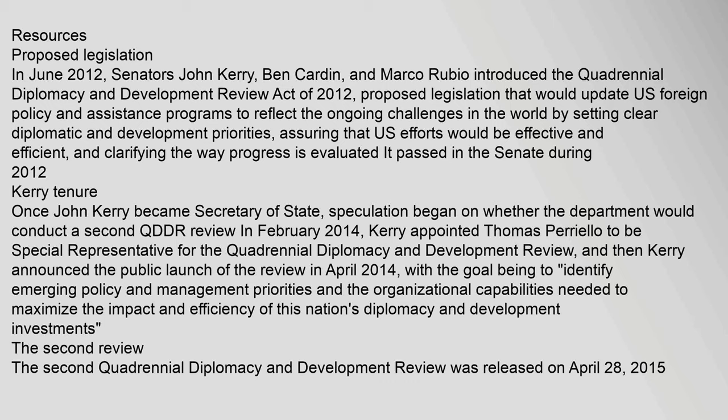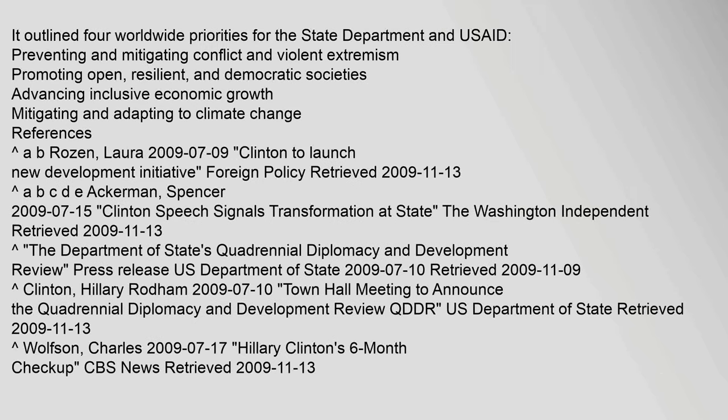The second Quadrennial Diplomacy and Development Review was released on April 28, 2015. It outlined four worldwide priorities for the State Department and USAID: preventing and mitigating conflict and violent extremism; promoting open, resilient, and democratic societies; advancing inclusive economic growth; and mitigating and adapting to climate change.